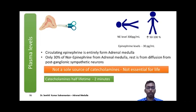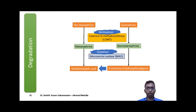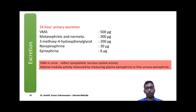The half-life of catecholamines is very short — only about 1 to 3 minutes — because they are immediately acted upon by the enzyme catechol-O-methyltransferase (COMT), which methylates norepinephrine and epinephrine to form normetanephrine and metanephrine respectively. These are further acted upon by monoamine oxidase (MAO) to form vanillylmandelic acid (VMA) and 3-methoxy-4-hydroxyphenylglycol. Due to the rapid action of these enzymes, catecholamines are degraded quickly. The degraded catecholamines are excreted by the kidney.